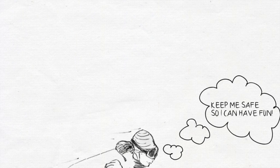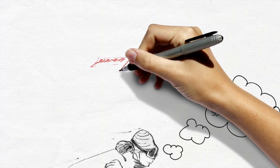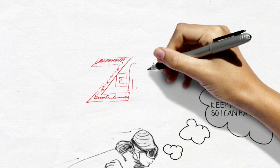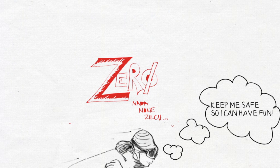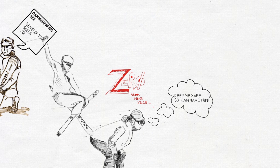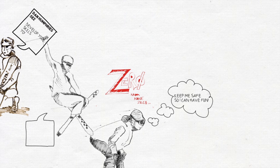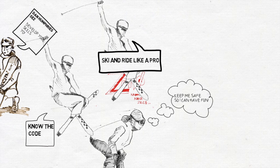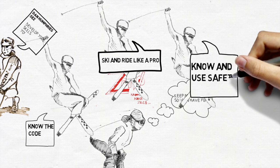The Ski and Snowboard Schools of Aspen Snowmass are committed to creating a zero-injury workplace, keeping our pros happy, healthy, and working all season. Three things that will help us achieve this goal are: know the code, ski and ride like a pro, and use safety skills.